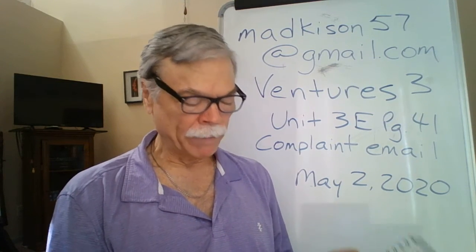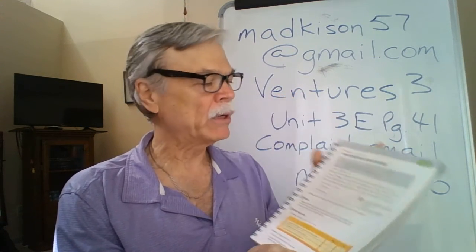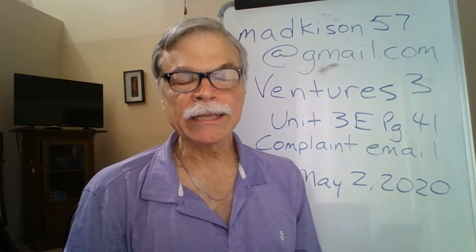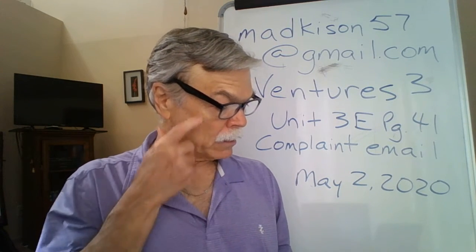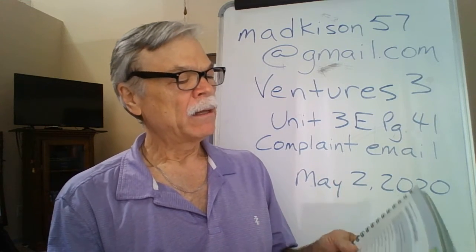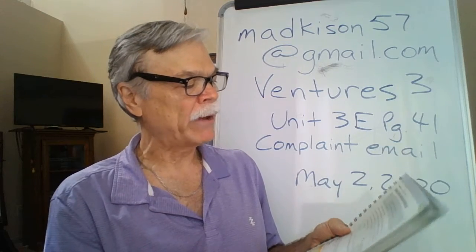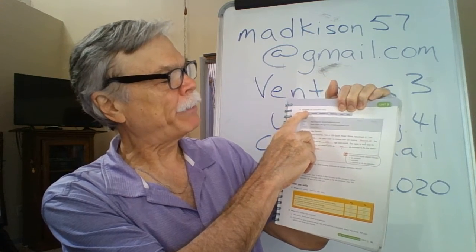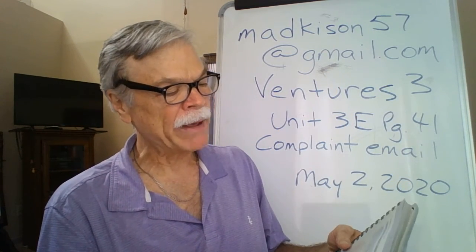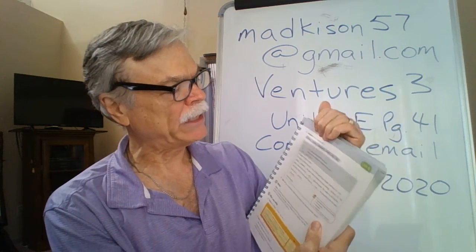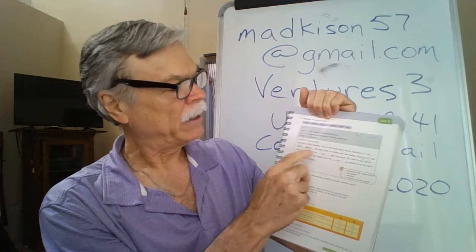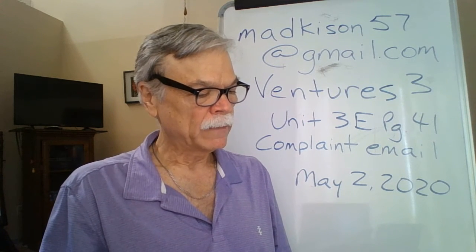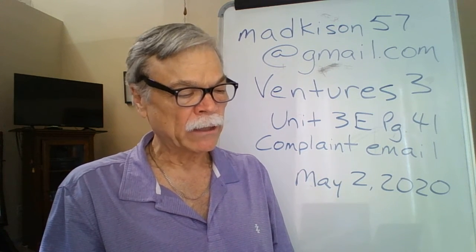For today's lesson, we're going to start on page 41 of the Ventures 3 book. That's Unit 3E, and we're going to read another example of a complaint email. I'd like to begin by reading the words in the gray box right above the email. Part C on page 41 begins by saying complete the complaint email. We're going to use these words that are in the gray box to fill in the blanks in the email below. Please follow with me and read each word as I do.